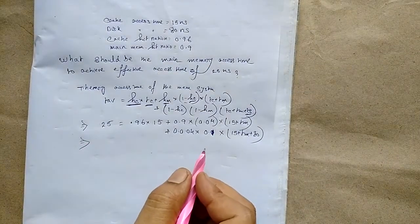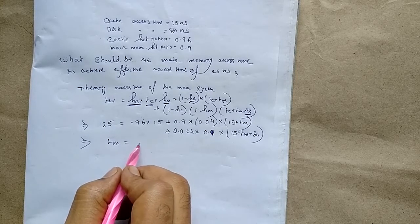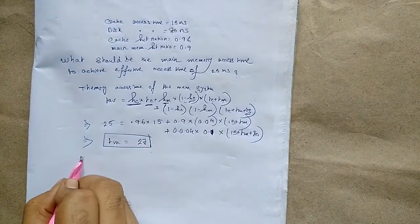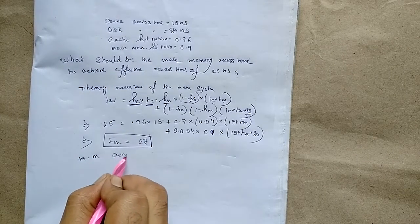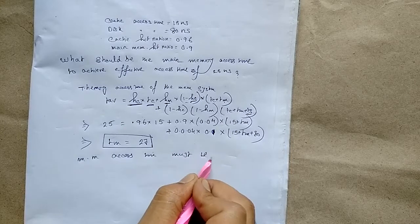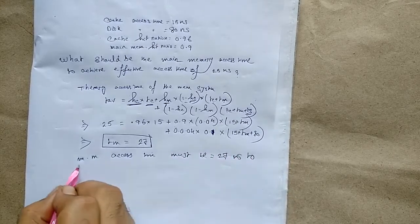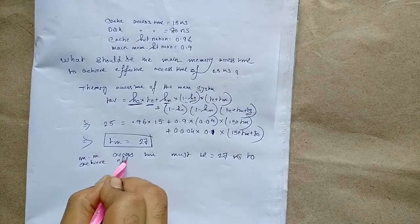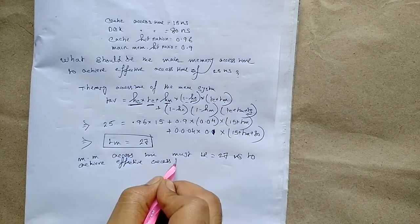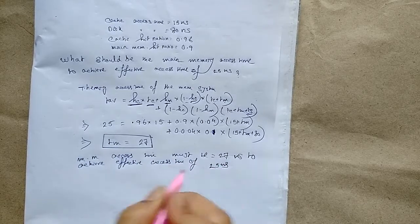Simplifying this equation, we get the value of tm equal to 27 nanoseconds. So the main memory access time must be 27 nanoseconds to achieve an effective access time of 25 nanoseconds.